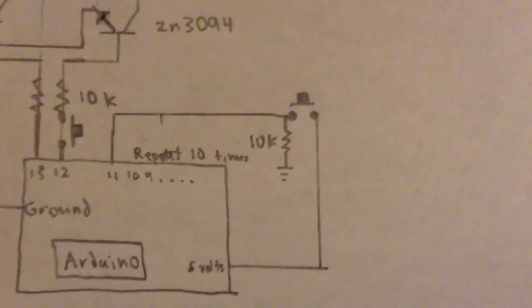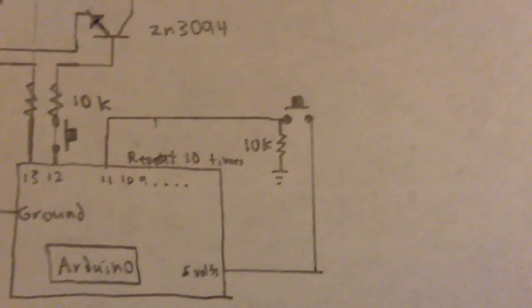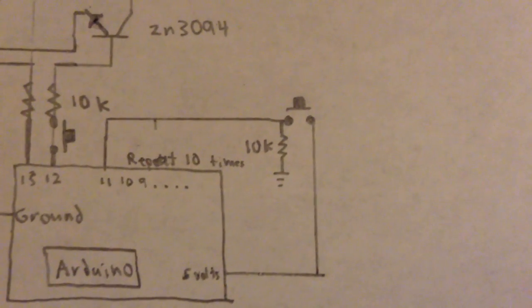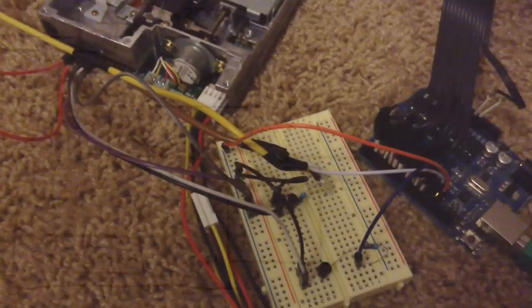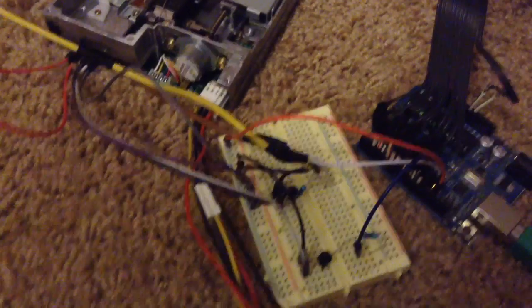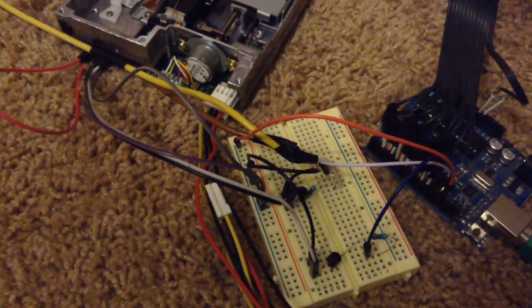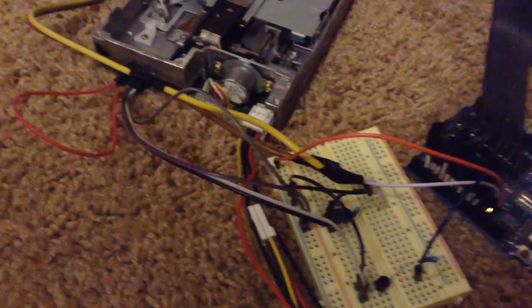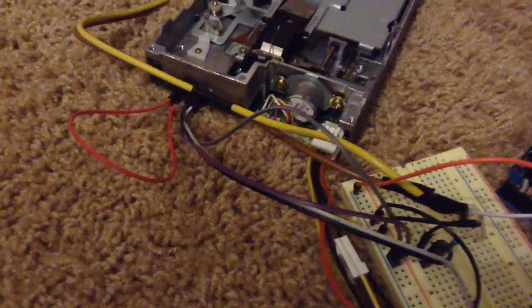This is the part of the schematic that shows the buttons on the piano and how they're connected to the Arduino. This is the breadboard that I used to hold the transistors and resistors. Here is how it's connected to the floppy drive.